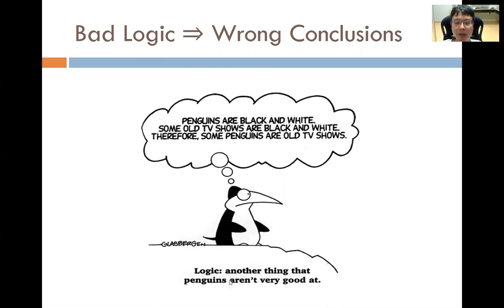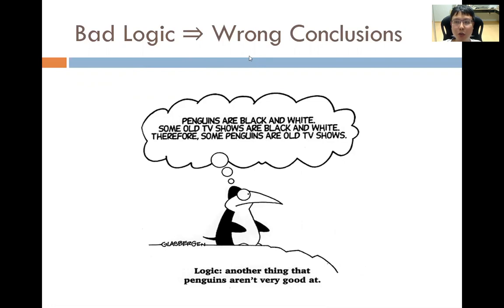So, look at this figure. This penguin says that penguins are black and white. Some old TV shows are black and white. Therefore, some penguins are old TV shows. So clearly, this penguin is a bit educated because he can tell that he is black and white, and some old TV shows are black and white. However, he has bad logic and concludes that some penguins are old TV shows, which we know is not true. This is an example of how bad logic can lead us to the wrong conclusions.